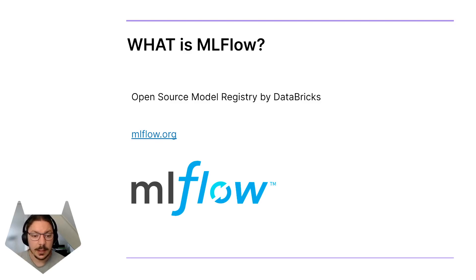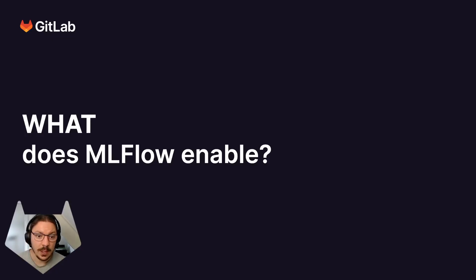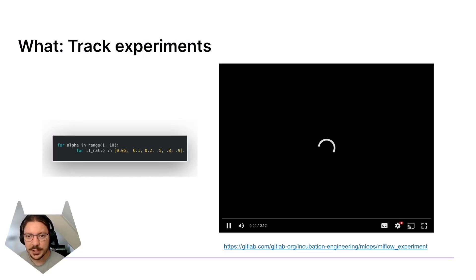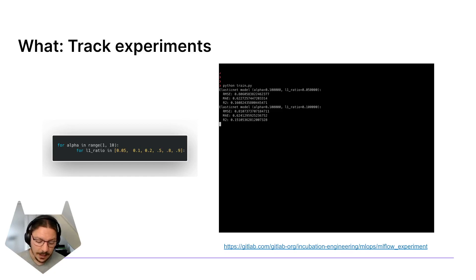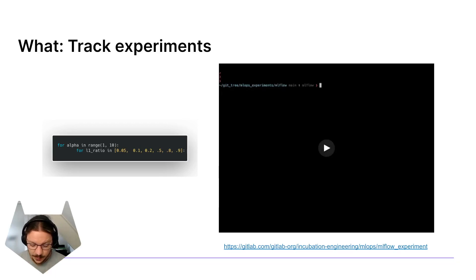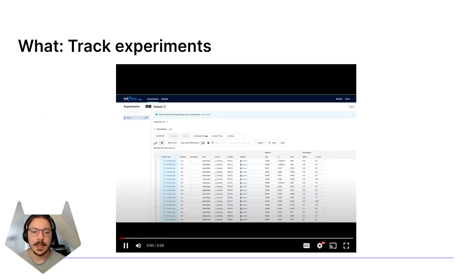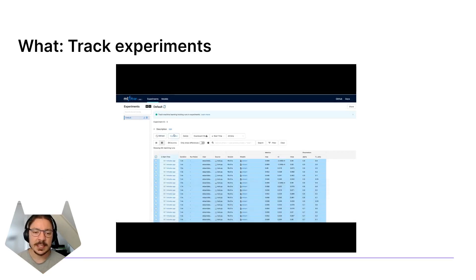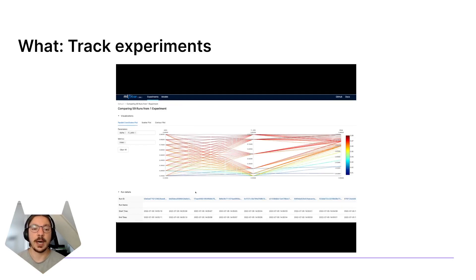It's a very popular open source project, but more important than what it is, is what does it enable teams to do. First of all, track experiments. When we create machine learning models, a big important part of this is hyperparameter tuning. We create code but the parameters we pass can make a lot of difference on the output, so we create an experiment where we run training multiple times with different parameters. MLflow makes it easy to compare and explore your hyperparameter space.